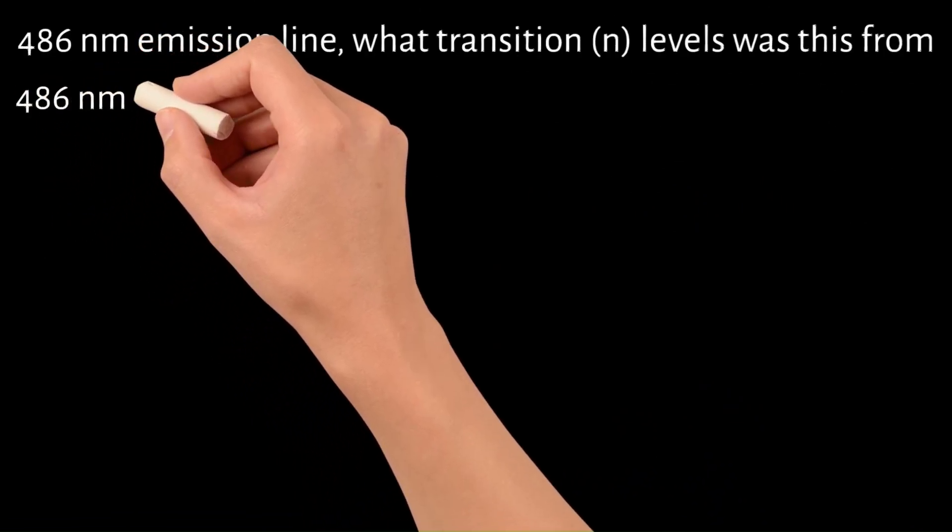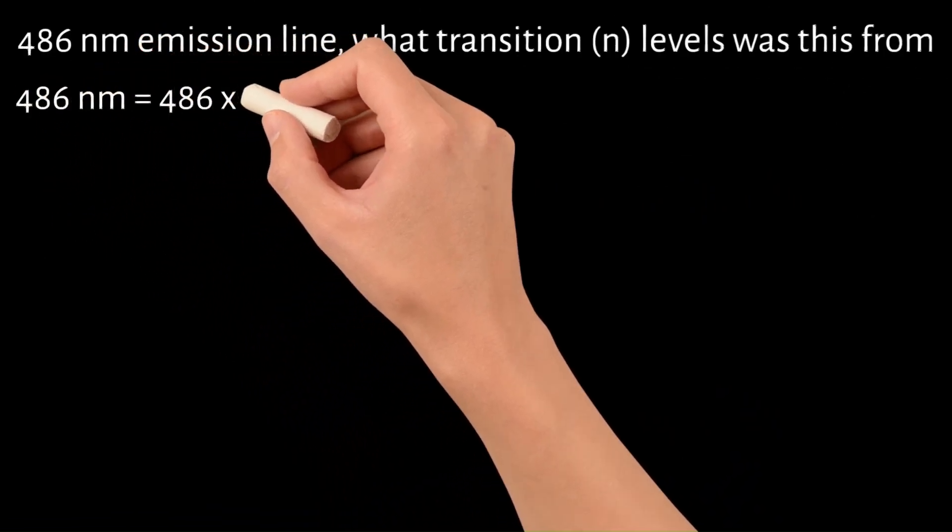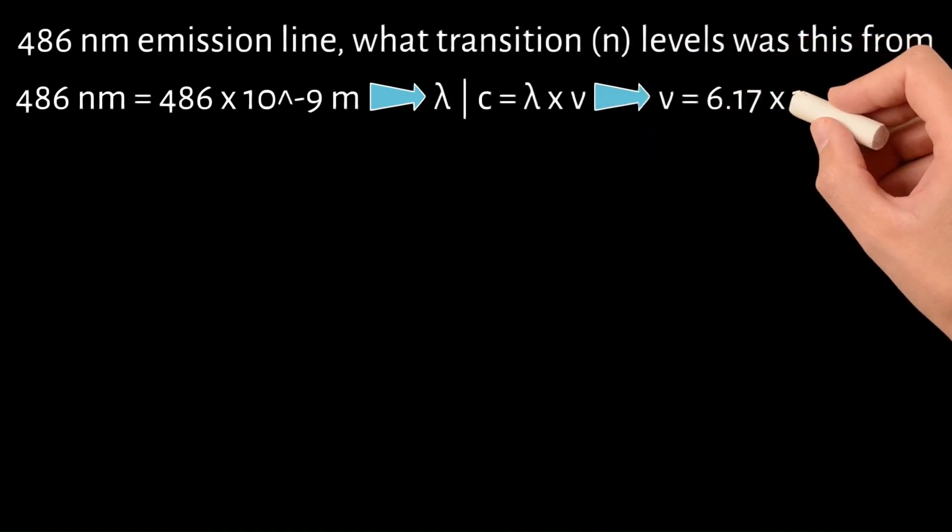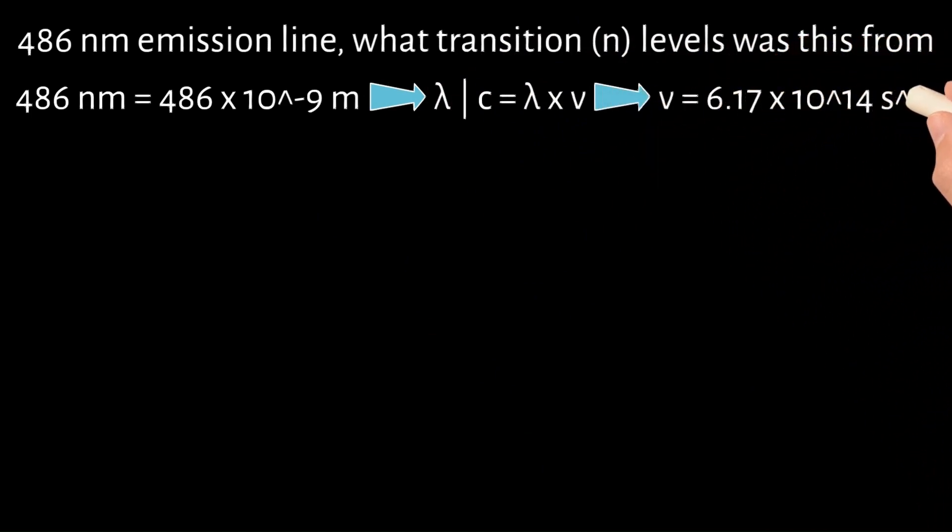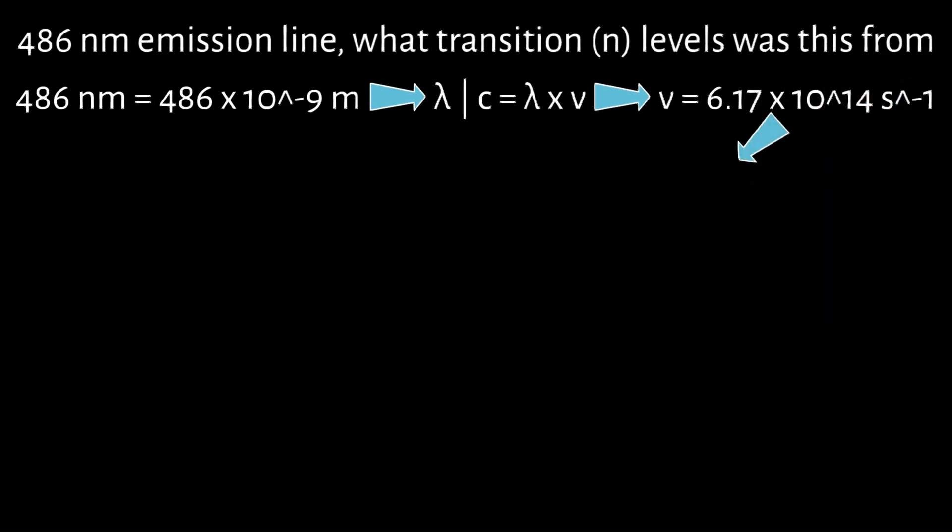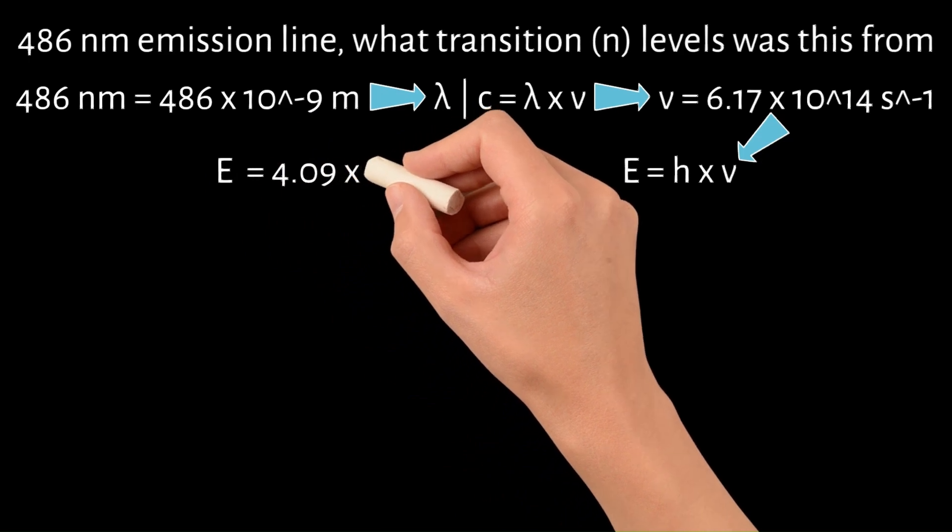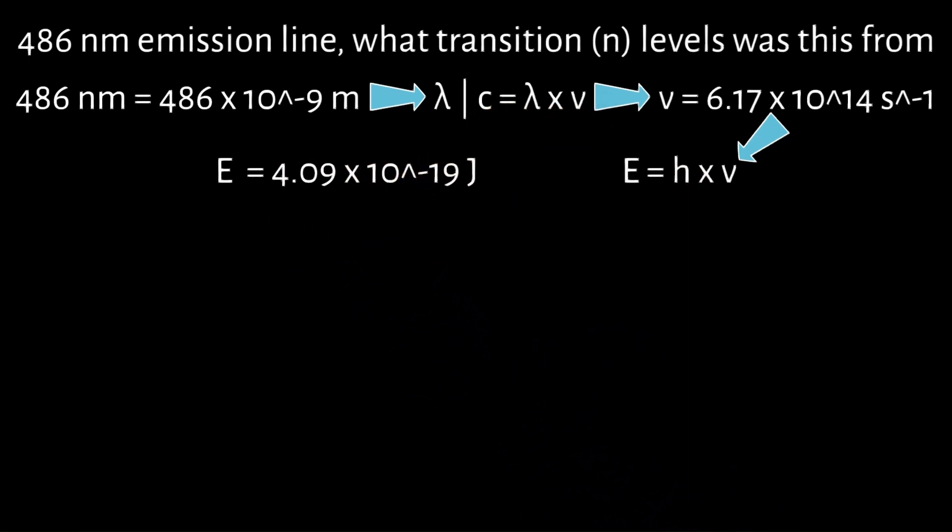Given 486 nanometers equals 486 times 10 to the negative 9 meters, you can plug that into lambda and C equals lambda nu and get the frequency nu, which is 6.17 times 10 to the 14th per second. Plugging that into E equals H nu, we get E equals 4.09 times 10 to the negative 19th joules.